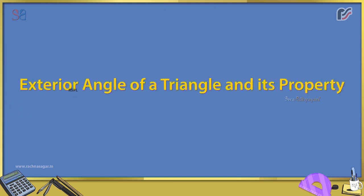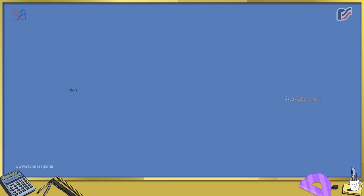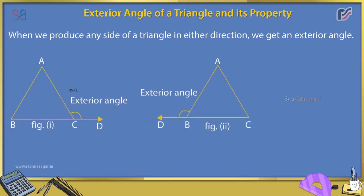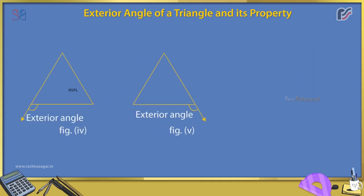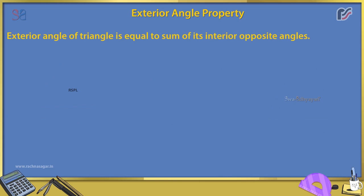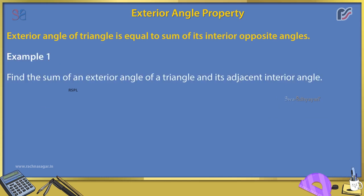Exterior angle of a triangle and its property. When we produce any side of a triangle in either direction, we get an exterior angle. Exterior angle property: the exterior angle of a triangle is equal to the sum of its interior opposite angles.